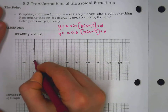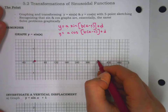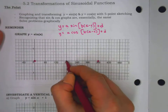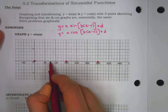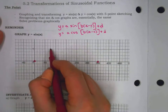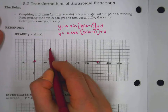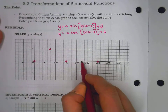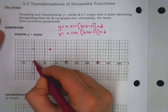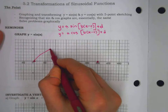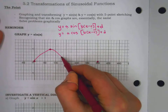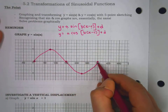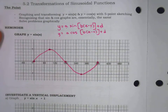First point, last point at 360, halfway point at 180, right in the middle, quarter way at the max, three-quarter way at the minimum, and a smooth curve connecting to give us our sinusoidal function.